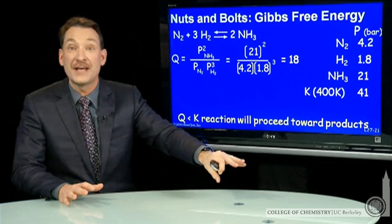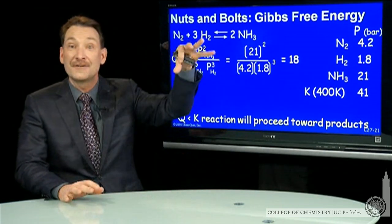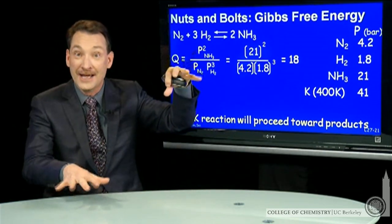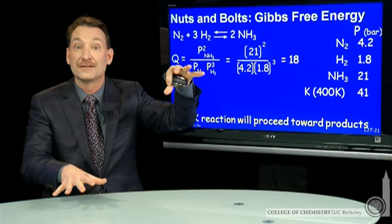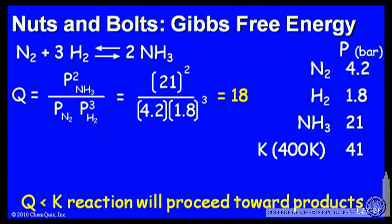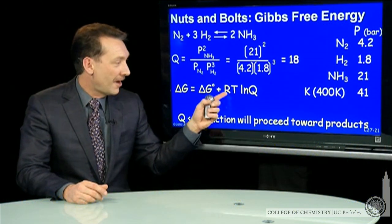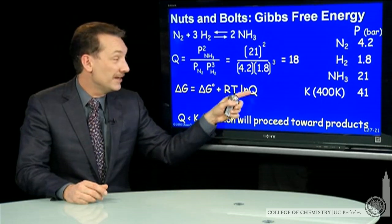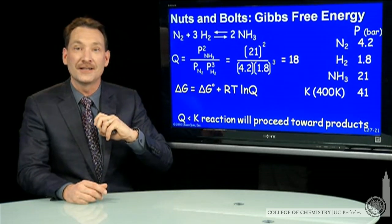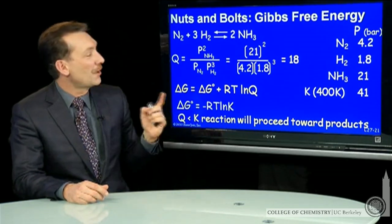That means it has to proceed further downhill. The reactant free energies are still too high compared to the product free energies. So let's see if that holds true. I can calculate delta G from the standard state free energy difference and R, the temperature, and this equilibrium quotient that I've just calculated.